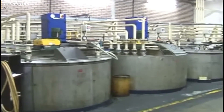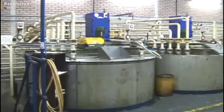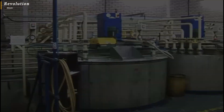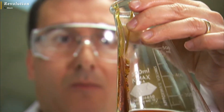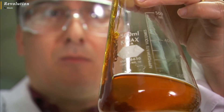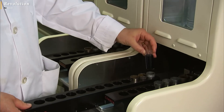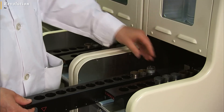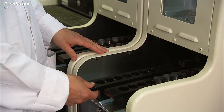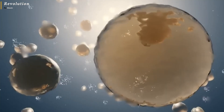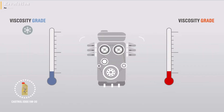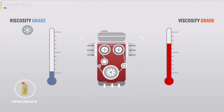After all stages have been carried out, the next process is quality testing. The blended oil then undergoes various quality tests. These tests include viscosity checks to ensure the oil has the right thickness, and flash point tests to determine the temperature at which the oil begins to burn.